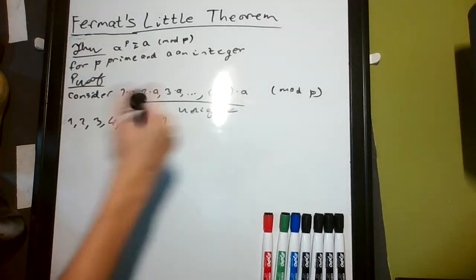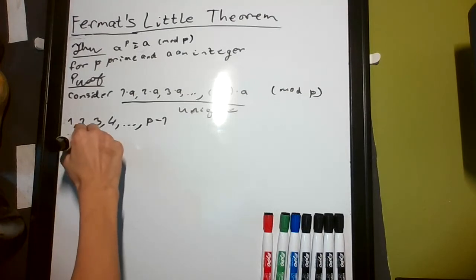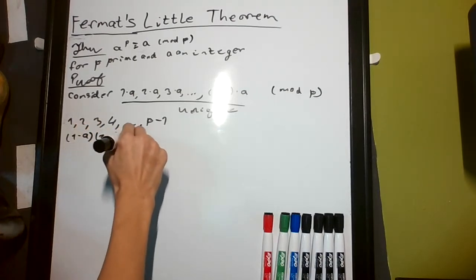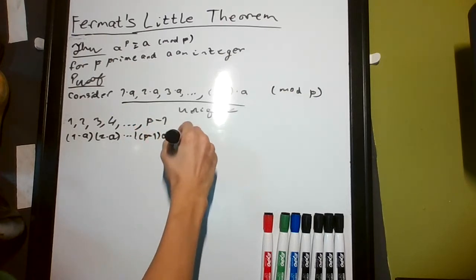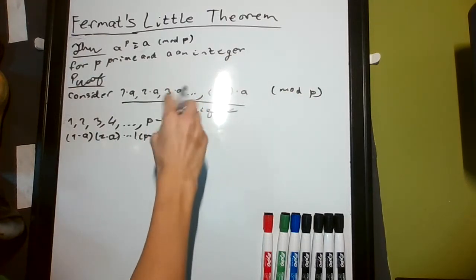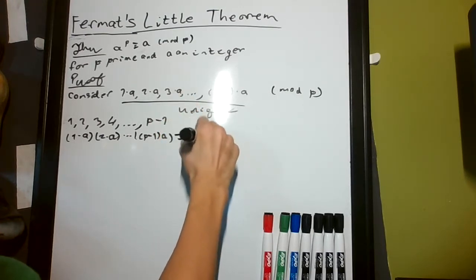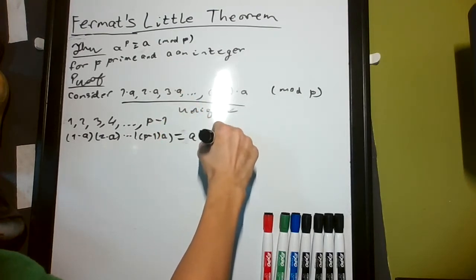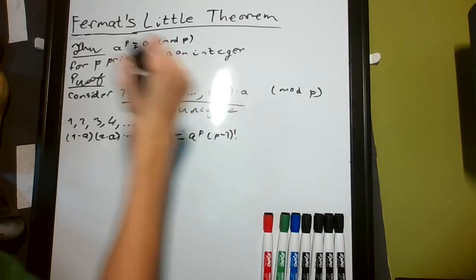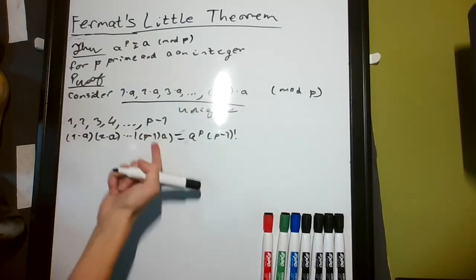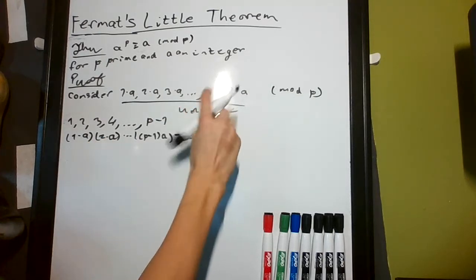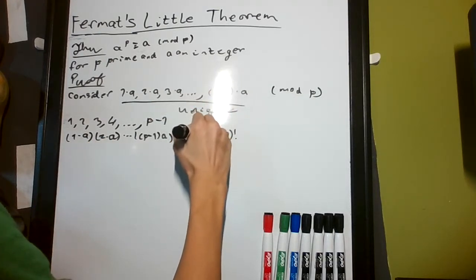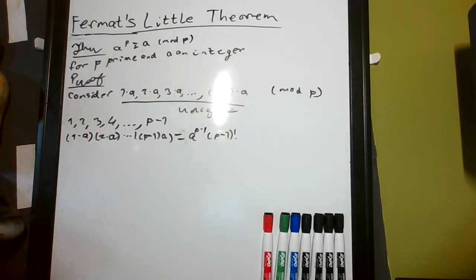What if we multiply all these together? We have 1 times a, times 2 times a, all the way up to p minus 1 times a. What does this equal? It equals a to the p minus 1 times p minus 1 factorial, right? That's 1 times 2 times 3 times 4, all the way to p minus 1, and then a times itself p minus 1 times.